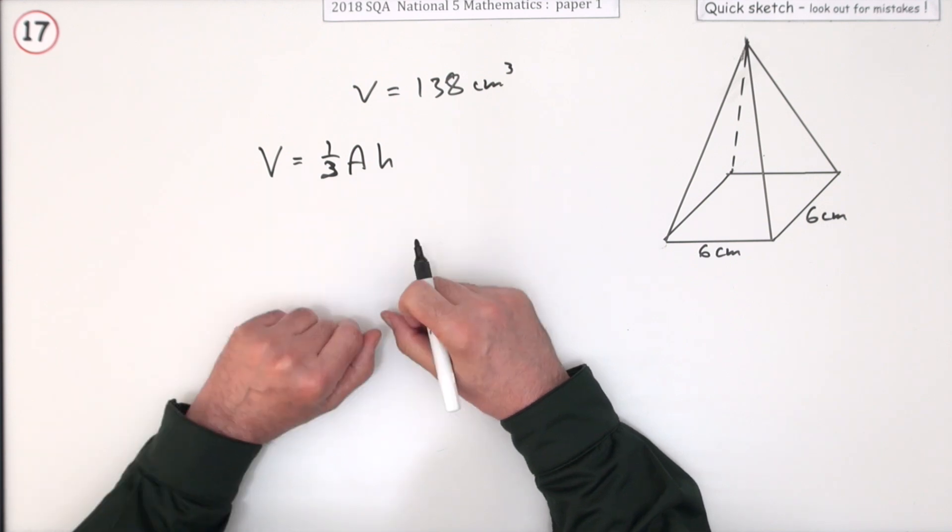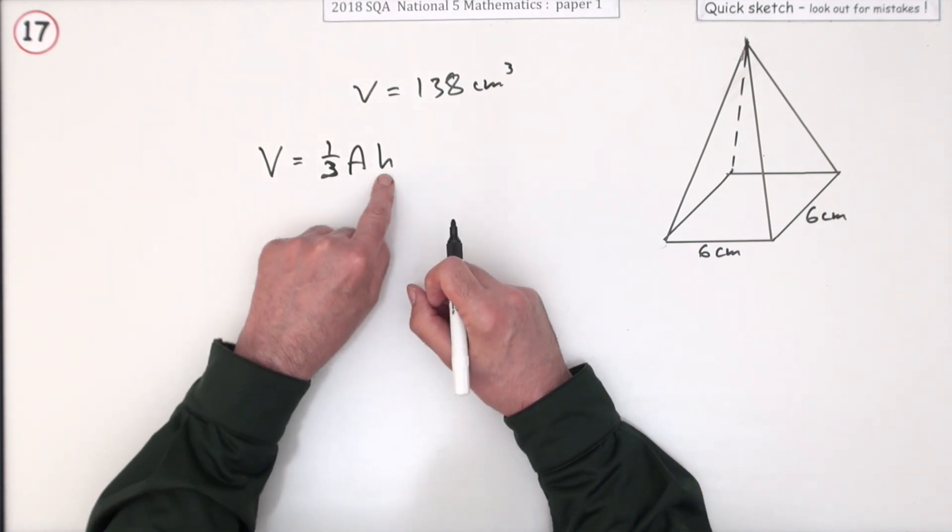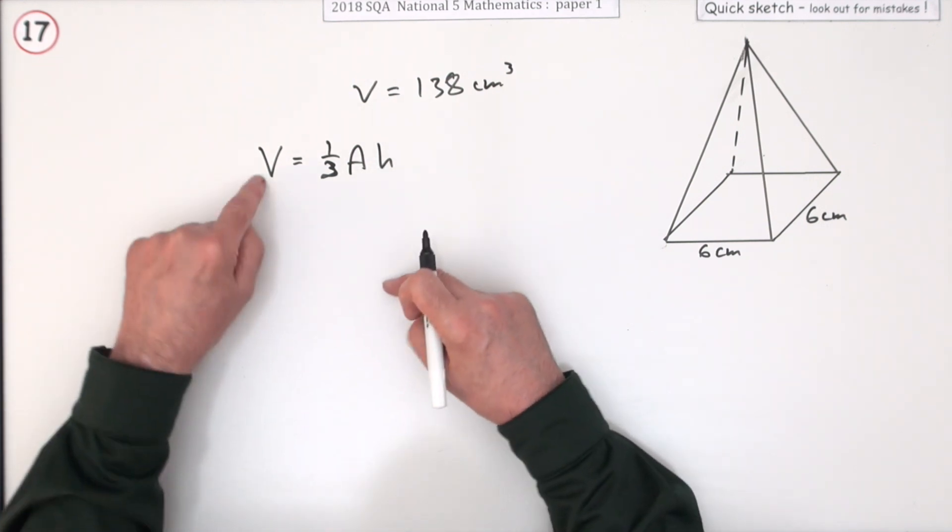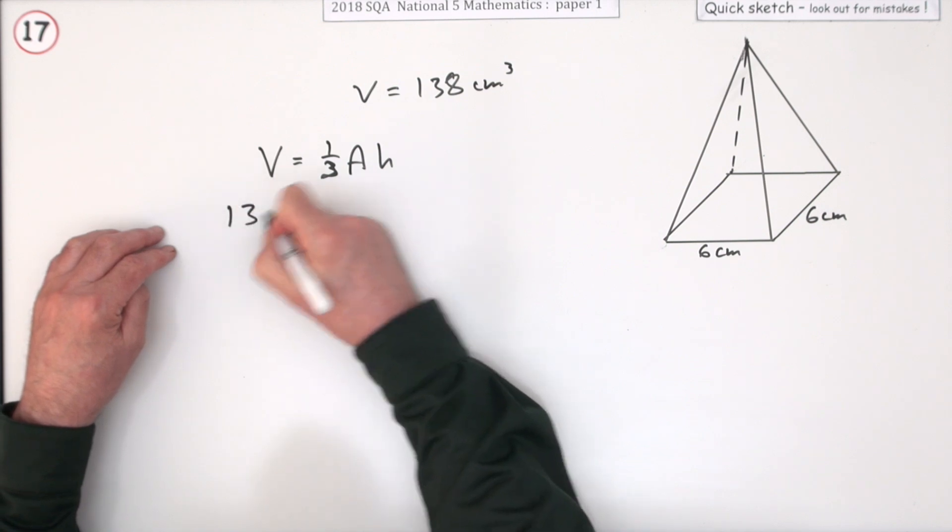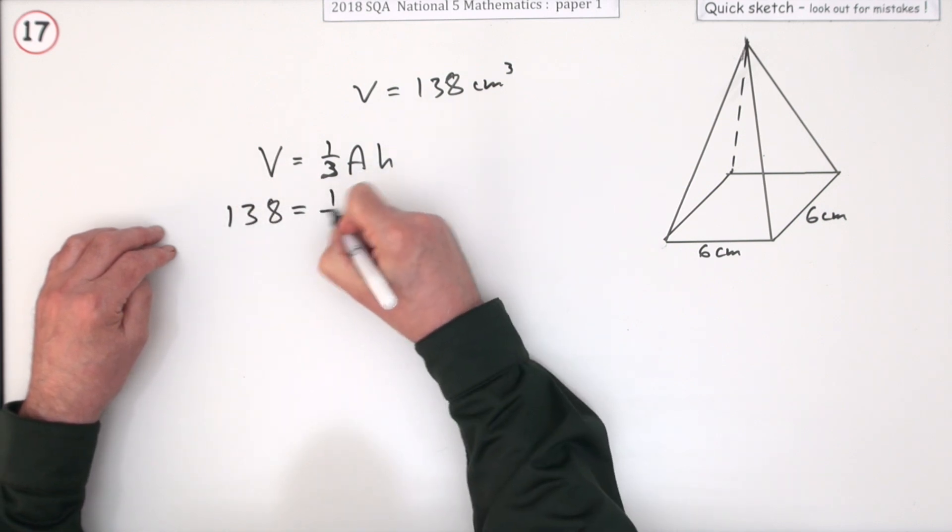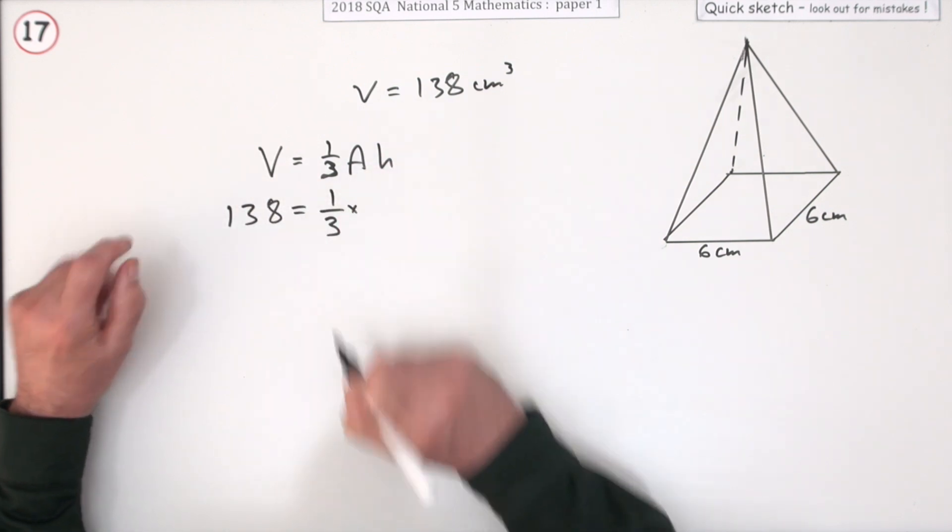So it's just a case of putting the figures in. You've defined the height, that means you need to know numbers for these two. Well I know that one straight away. V is 138. Obviously a third is a third. What's the area of the base?